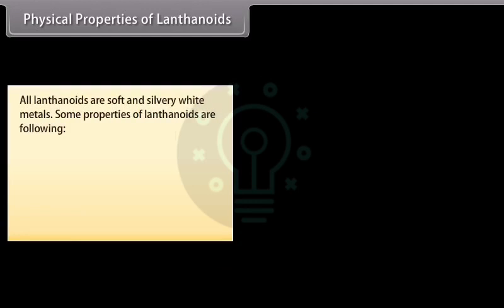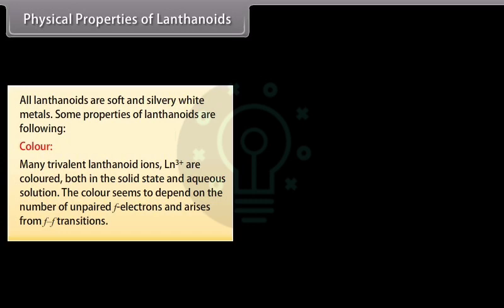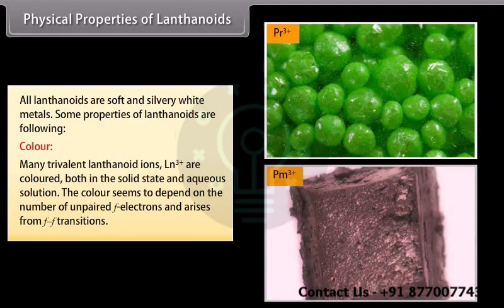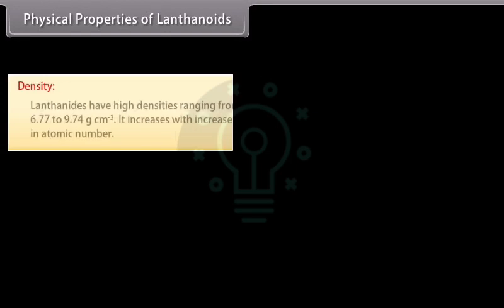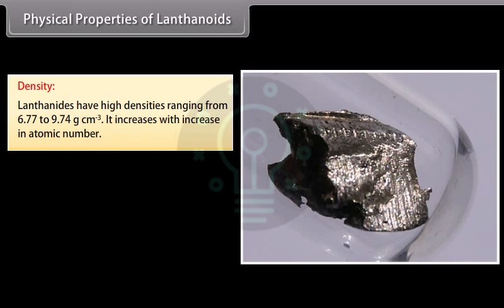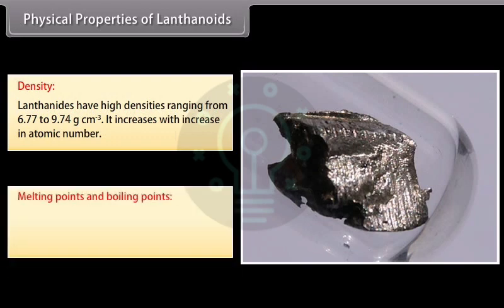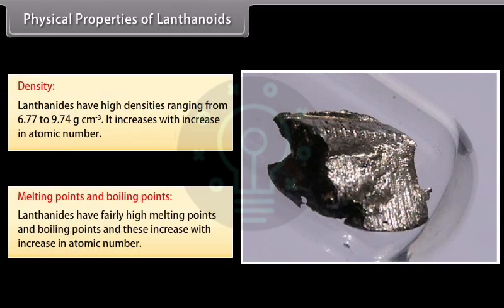Physical properties of lanthanoids: All lanthanoids are soft and silvery white metals. Many trivalent lanthanoid ions (Ln³⁺) are colored both in the solid state and in aqueous solution; the color depends on the number of unpaired F electrons and arises from f-f transitions. For example, Pr³⁺ is green and Pm³⁺ is pink. Lanthanoids have high densities ranging from 6.77 to 9.74 g/cm³, increasing with atomic number. They have fairly high melting and boiling points, which increase with atomic number because atomic attraction increases as size decreases.